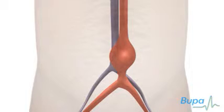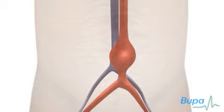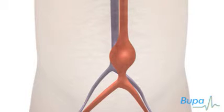Surgery can repair the aorta. This may be emergency surgery if the aneurysm ruptures, or elective — that is, planned surgery — if an aneurysm is large and the risk of rupture is high. There are two main surgical options: open surgery, as shown in this animation, and keyhole surgery.